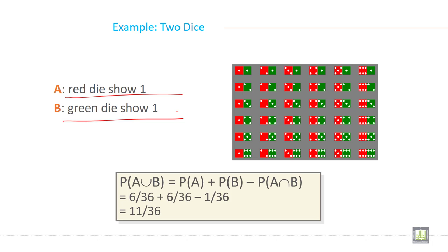So probability of A union B is probability of A plus probability of B minus probability of A intersection B. So 6 by 36 plus 6 by 36 minus 1 by 36 equals 11 by 36.